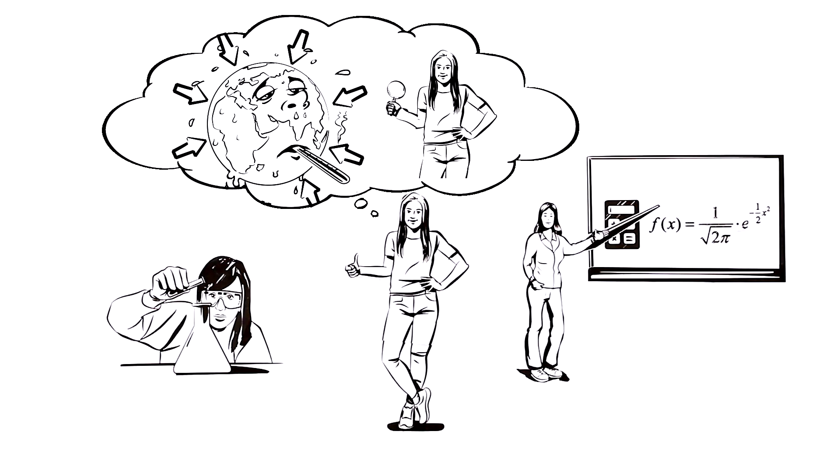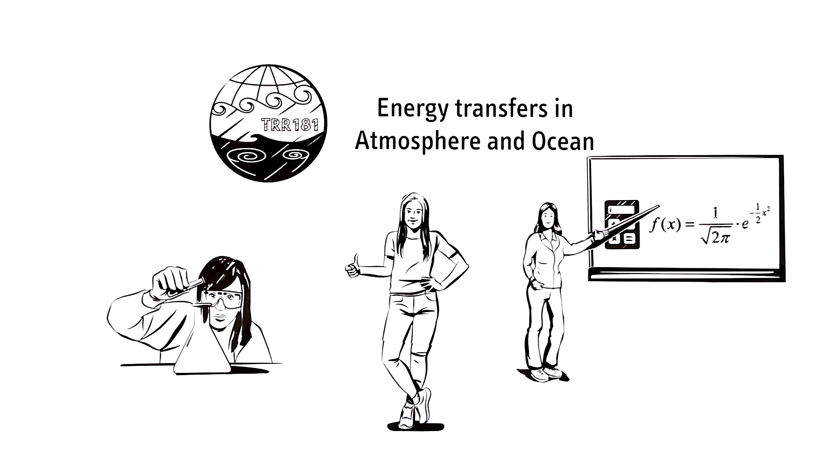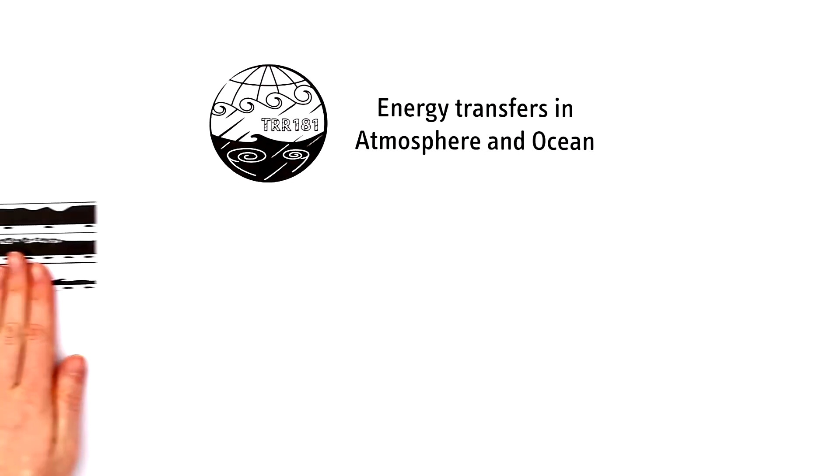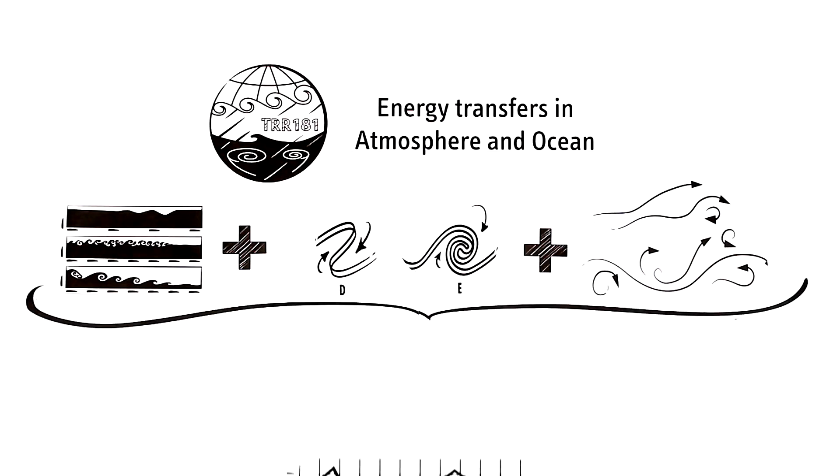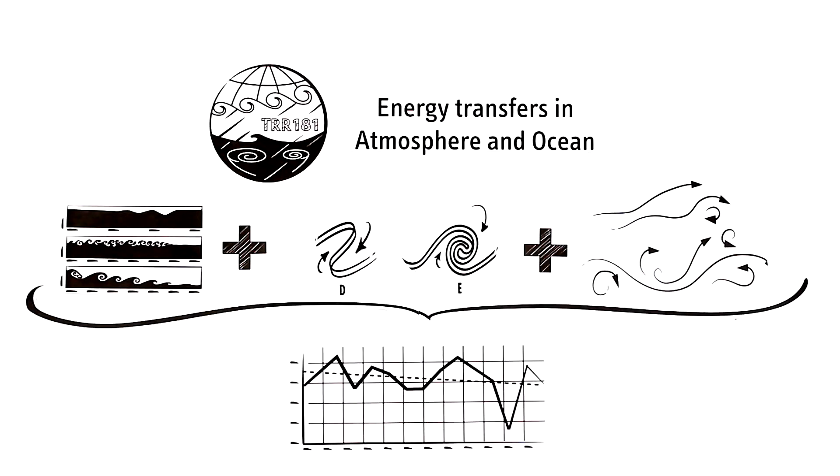Of course it does. One example is the research project Energy Transfers in Atmosphere and Ocean. It examines the interactions between waves, vortices, and turbulence, which have a very strong effect on the future evolution of climate.